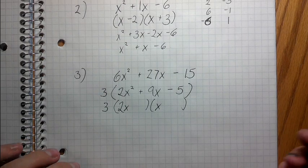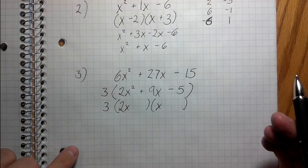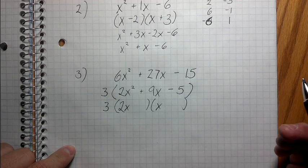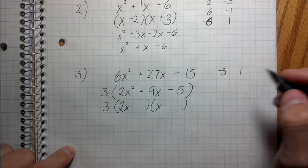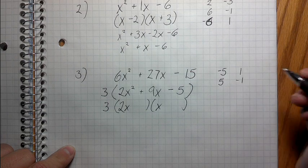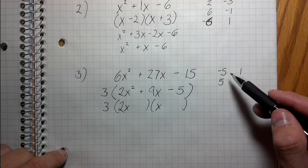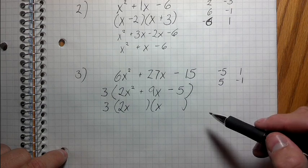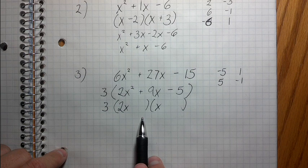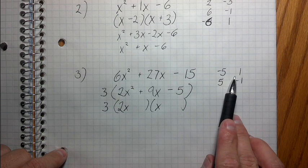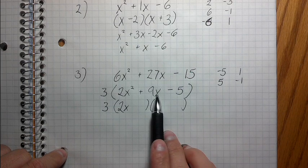So 2x and x go here because 2x times x is 2x squared. Now I'll go into my normal process and think of factors of negative 5. Negative 5 and 1 is a pair of factors; 5 and negative 1 is a pair of factors. Since 5 is prime, those are the only whole-number factor pairs. But do you see a problem? Negative 5 and 1 would add to negative 4, and 5 and negative 1 would add to positive 4 — neither of those is 9. So what's going on?